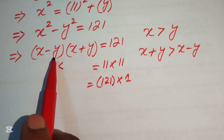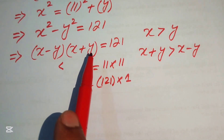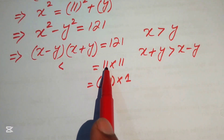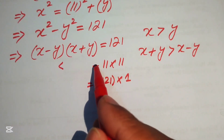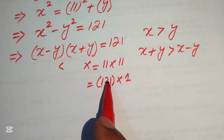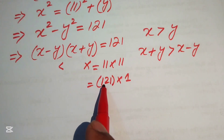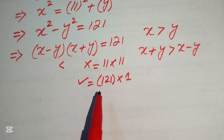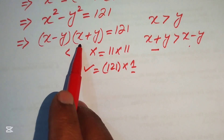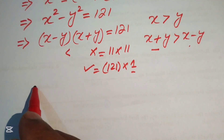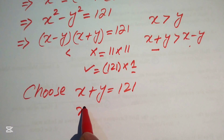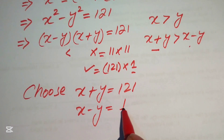Looking at these factor pairs: in the first case, both factors are equal, meaning neither factor is greater than the other, so we reject it — it contradicts the condition that x plus y is greater than x minus y. We choose the factor pair where one factor is greater than the other: 121 and 1. So x plus y equals 121 and x minus y equals 1.